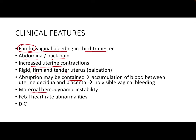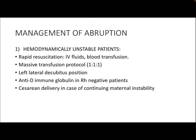Other clinical features include maternal hemodynamic instability due to blood loss, fetal heart rate abnormalities, and eventually DIC. For management of hemodynamically unstable patients with abruption, the priority is stabilization: rapid resuscitation with IV crystalloids and blood transfusion. If that fails, go for massive transfusion protocol in a 1:1:1 ratio. Keep the mother in left lateral decubitus position to reduce vena cava compression and increase venous return to the heart. Give anti-D immunoglobulin in RH-negative patients, and in case of continuing maternal instability, proceed with cesarean delivery.